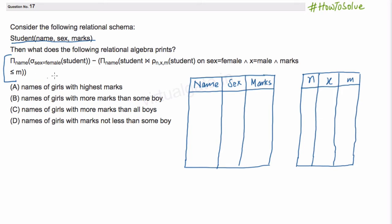We have to find out which one is the correct output of this relational algebraic expression. Let us start by taking some example. Here we have the relational schema student — this is the student table.